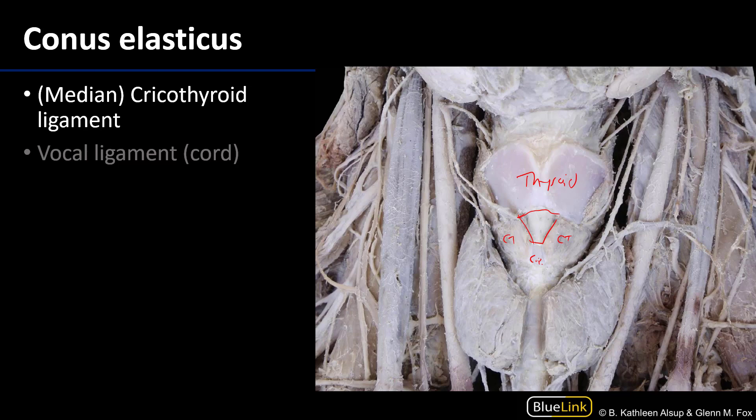The conus elasticus acts as a funnel, directing air superiorly towards the rima glottidis so that during phonation, air is directed at the vocal folds so they may vibrate to produce sound. We've discussed the various membranes and ligaments of the larynx — both extrinsic, such as the thyrohyoid membrane, and intrinsic, such as the quadrangular membranes and conus elasticus. Thank you for your time.